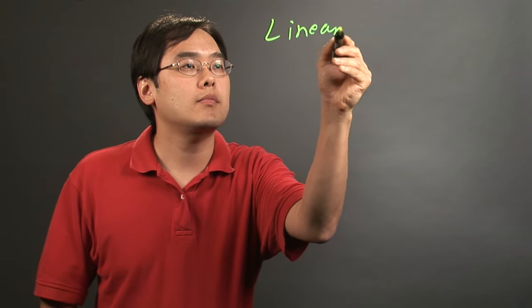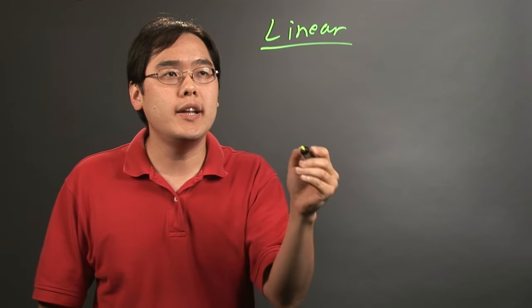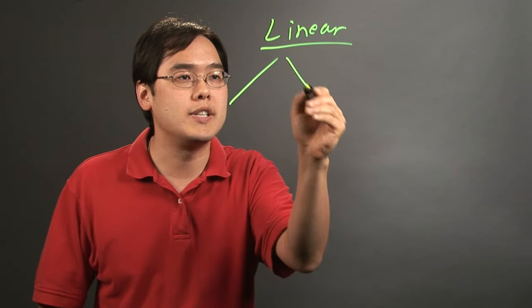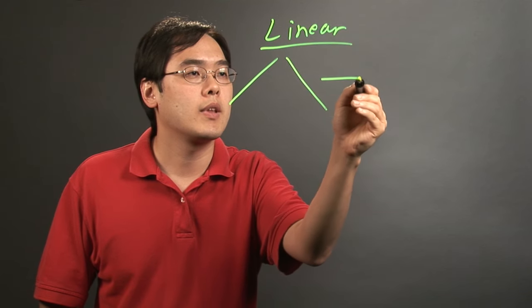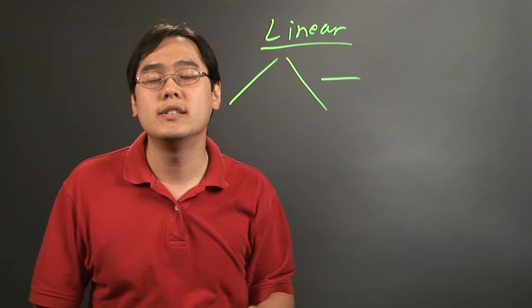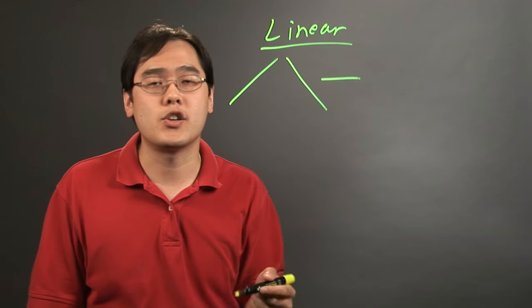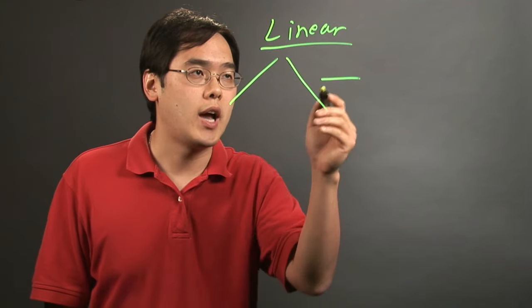Now linear, let's start off with a graph. Linear functions is basically that of a line. It could be upward, downward, or horizontal. There's also vertical lines, but vertical lines are not considered functions, so I won't draw that.